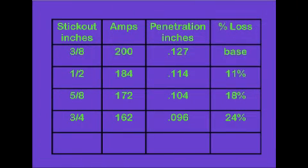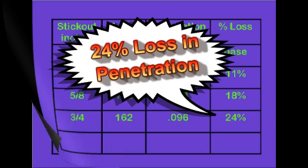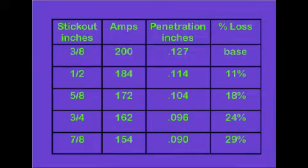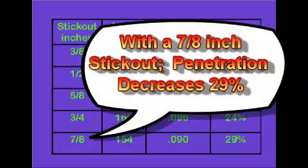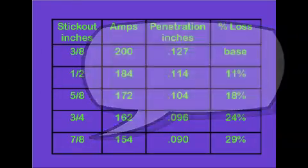Increasing the stick out from 3/8 to 3/4 of an inch reduces amperage to 162, decreasing penetration 24%. If the stick out is allowed to increase to 7/8, the amperage reduces to 154, which reduces penetration almost 30%.